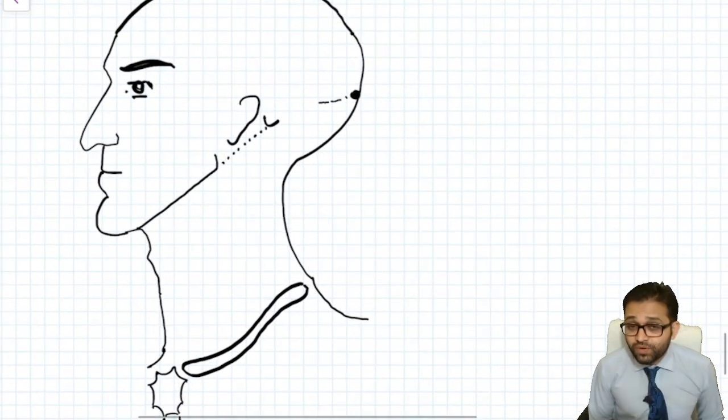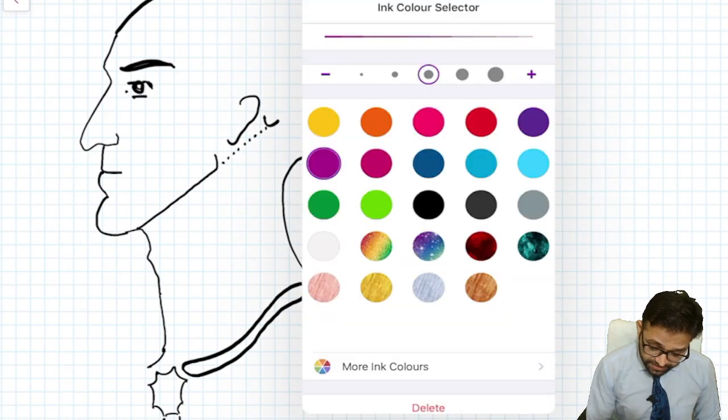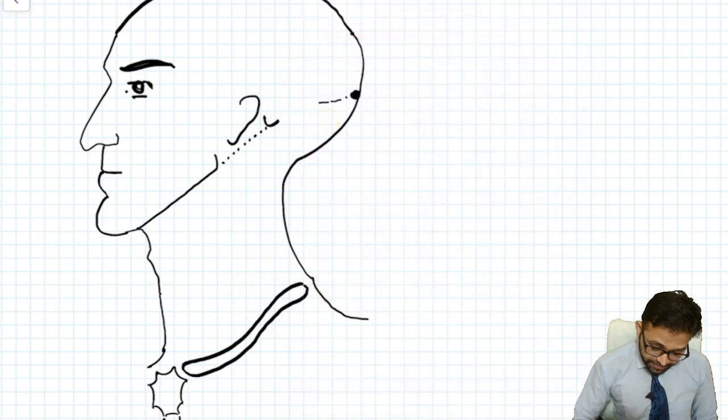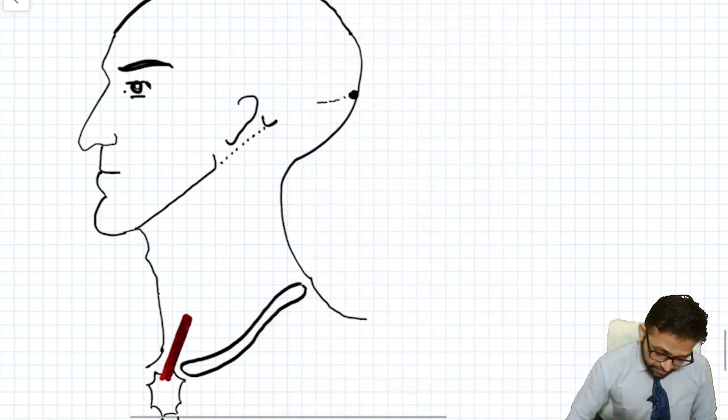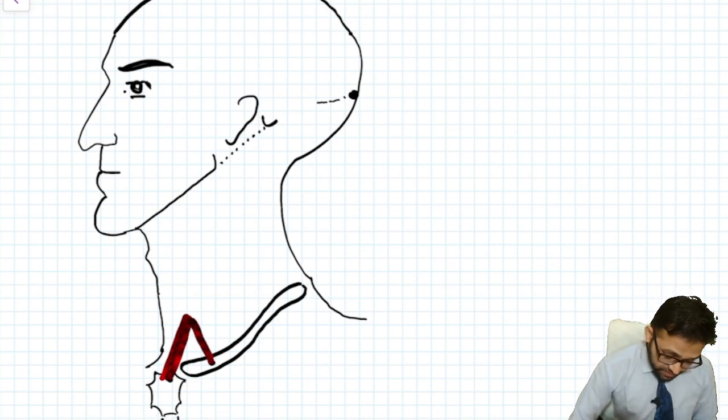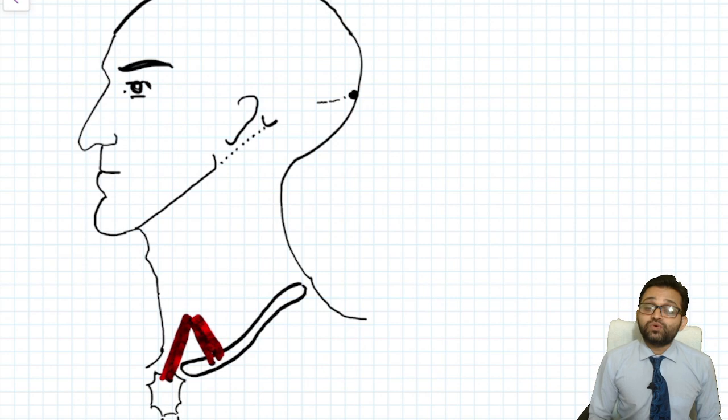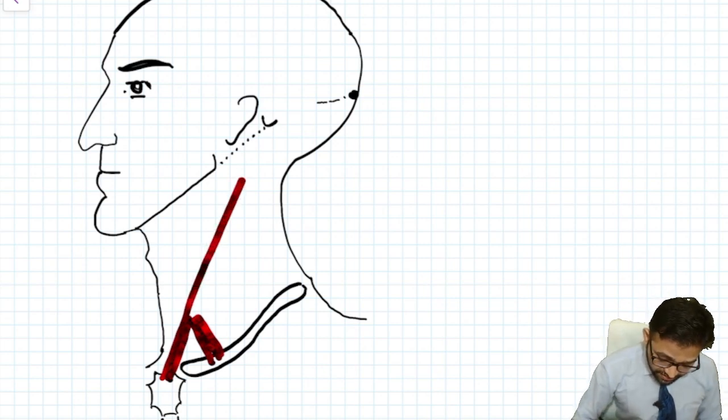I am going to tell you one muscle that is the sternocleidomastoid. Try to understand. One muscle is taking origin from our sternum manubrium, then it is taking origin from our clavicle. Do you remember? Medial two-third of the clavicle at superior surface gives origin to the sternocleidomastoid. Now both the fibers are uniting together and getting insertion into the mastoid process.